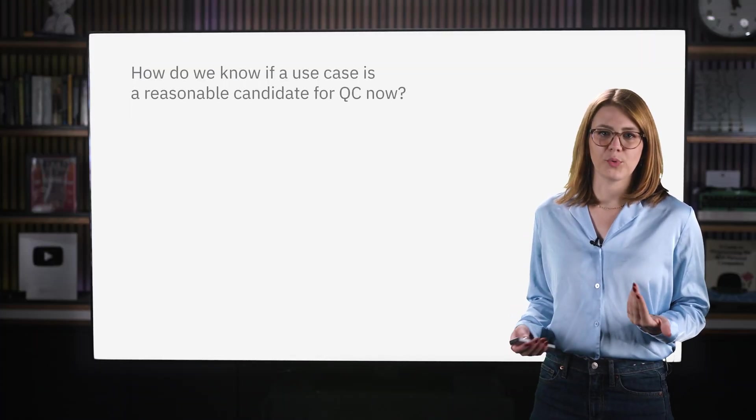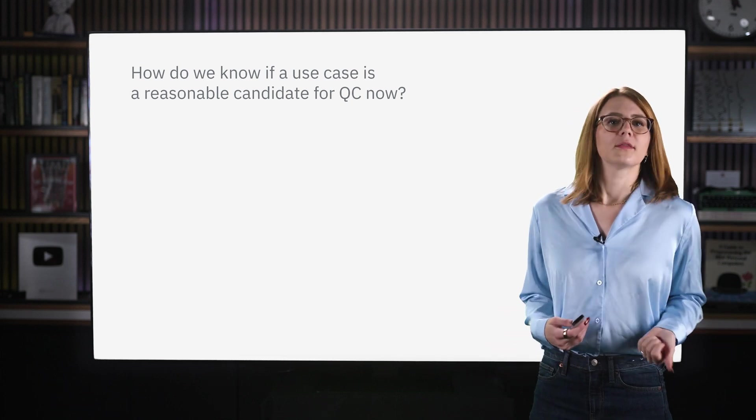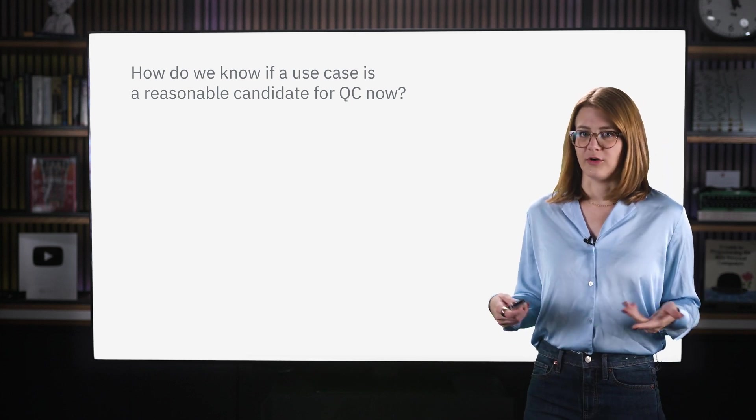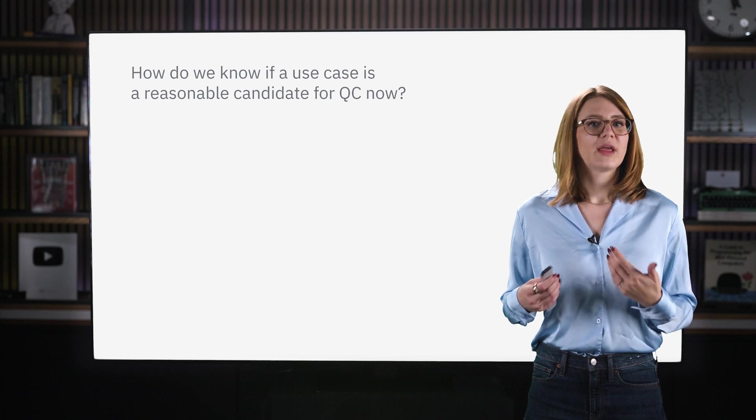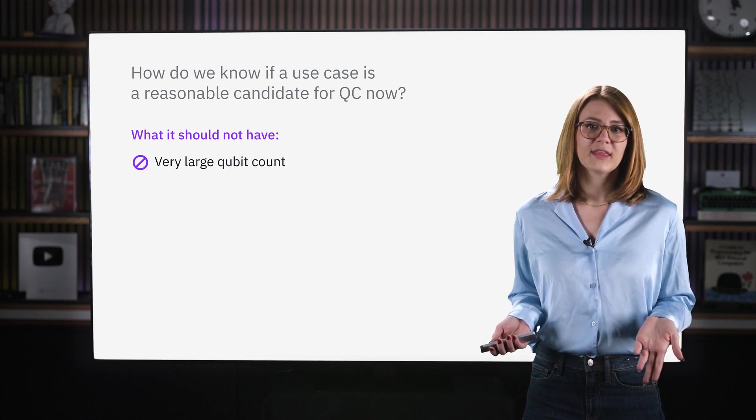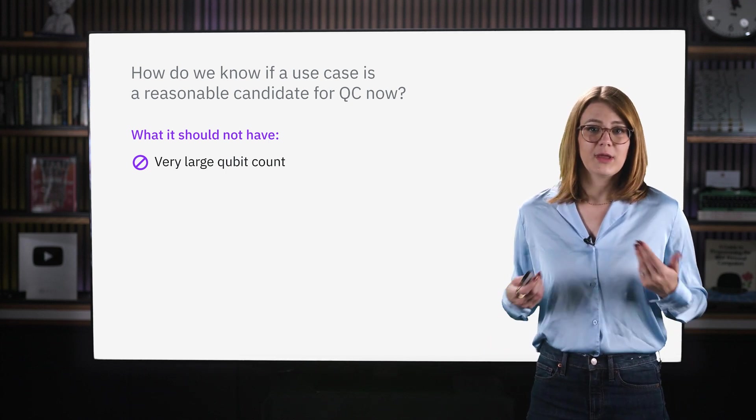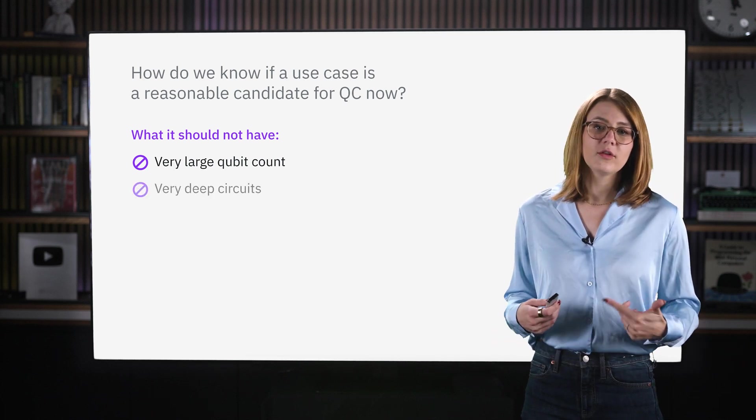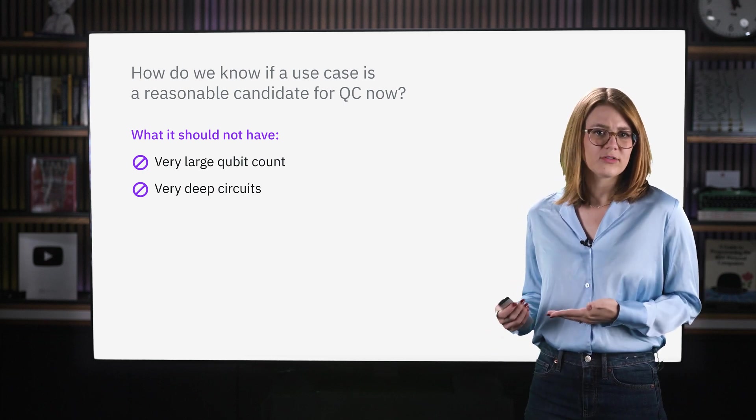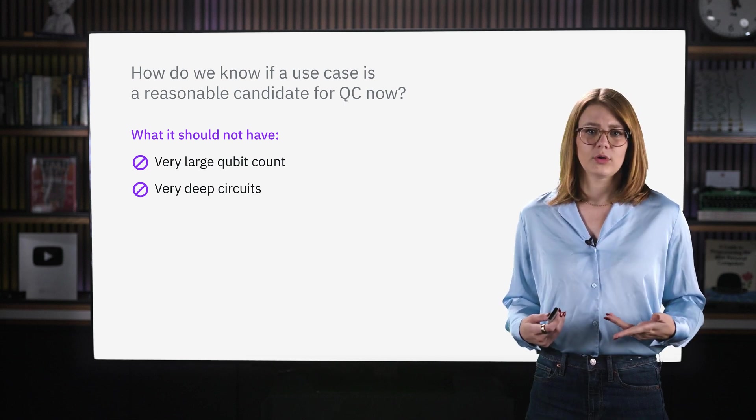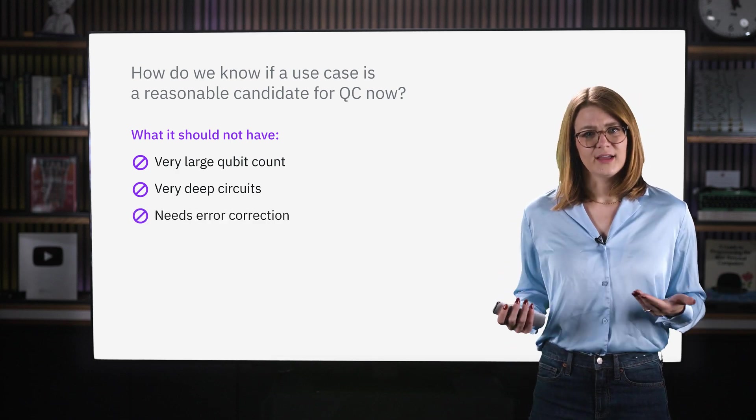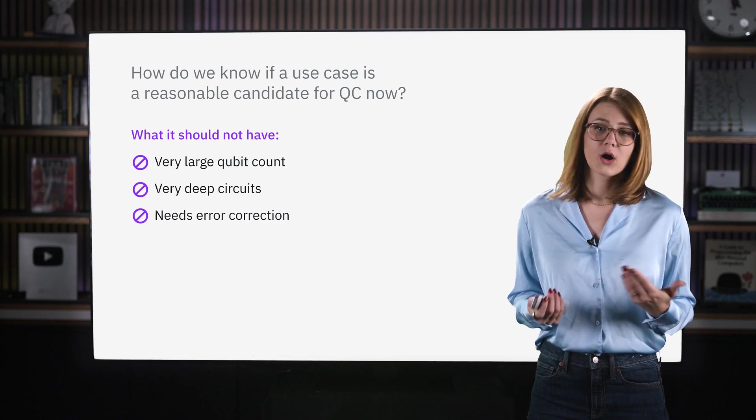So how do we know what use cases and problems could be suitable for quantum computing right now? And by that I mean there is significant reason to believe quantum utility, or even advantage, could be found either now or in the somewhat near future. Maybe it's easier to first name things that the problem should certainly not have. It can't require a huge number of qubits. We don't have processors yet that have thousands to millions of qubits available. That's one of the main reasons Shor's algorithm and the like are so far off. The circuits also can't be incredibly deep. But in general, if your experiment requires a depth that you haven't seen achieved in the literature yet, you might be in for a rough time. And lastly, any type of algorithm that we know will require error correction cannot be done yet.